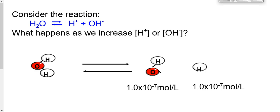Let's think about that reaction. Simplified: water breaks down to make hydrogen and hydroxide. It's the same reaction as two water molecules breaking down to make hydronium and hydroxide — they are equivalent ways of writing the same thing.